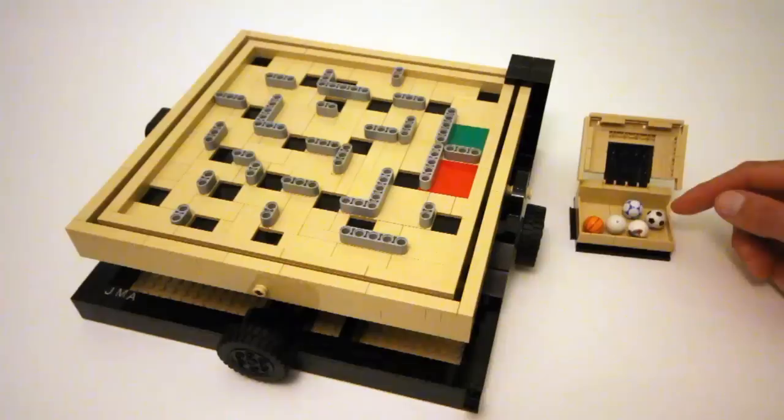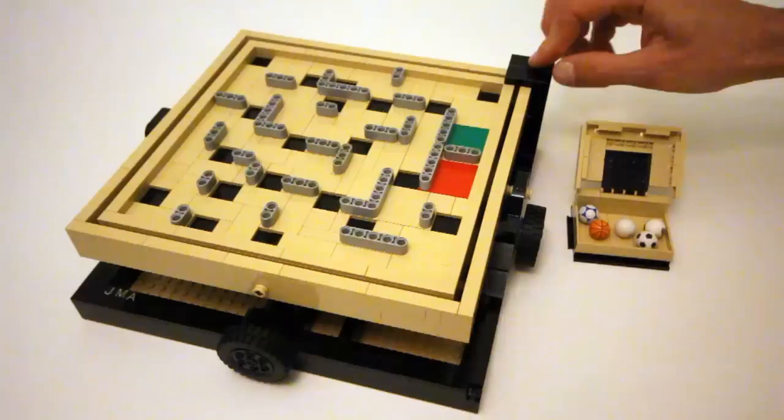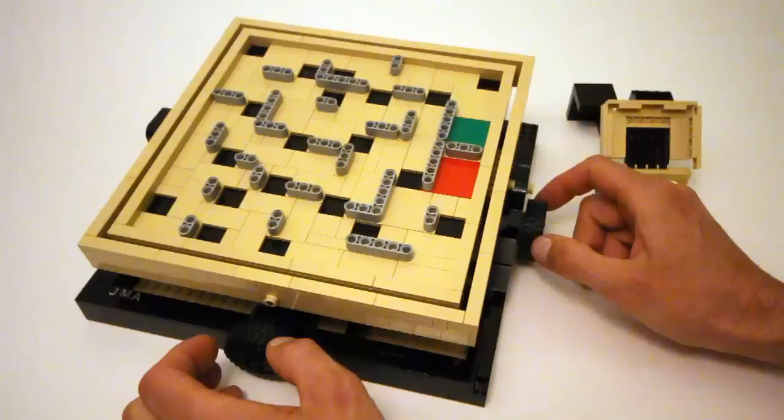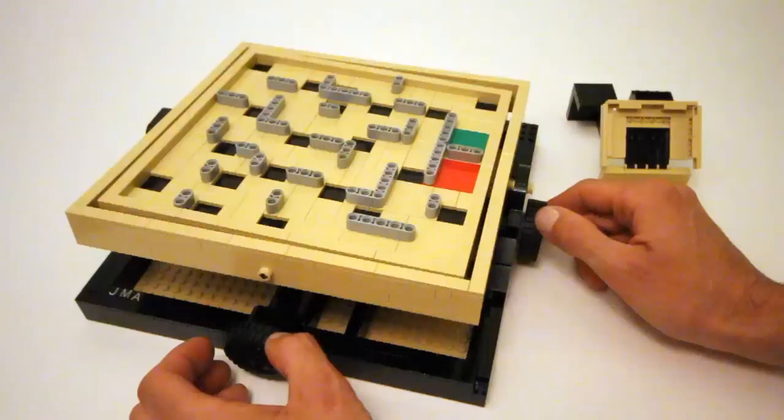So first of all, it's got this built-in container to store the balls, which are a couple of Lego soccer balls and a basketball. It also has this travel lock, which keeps the maze from moving while in transit. So with that removed, you can see how you can control the tilt of the maze using these two wheels.